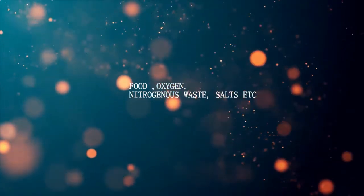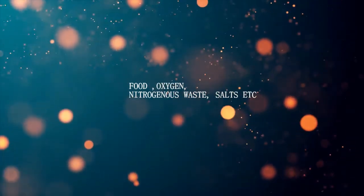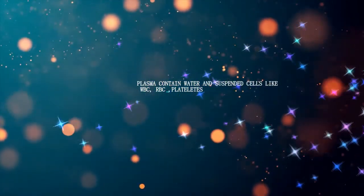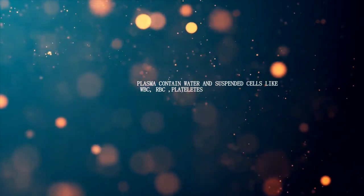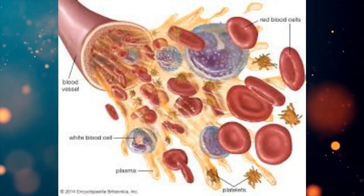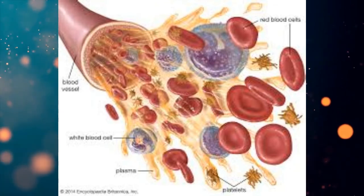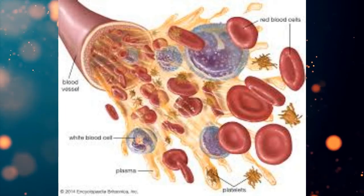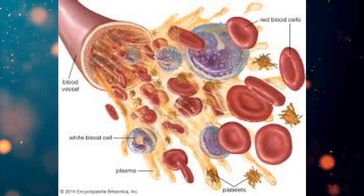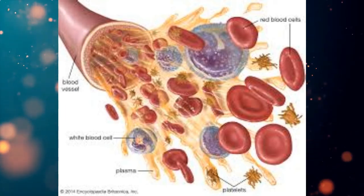Blood consists of a fluid medium called plasma, in which cells are suspended. Plasma transports food, carbon dioxide, and nitrogenous waste in salt form. Oxygen is carried by the red blood cells (RBCs). Other substances like salts are also transported by the blood.